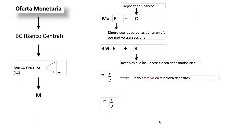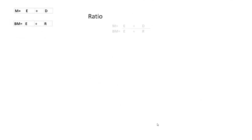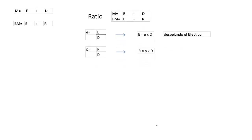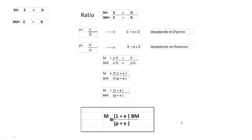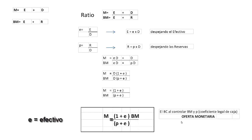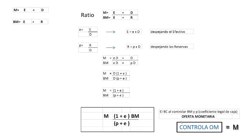El coeficiente legal de caja representa el porcentaje de depósitos que los bancos están obligados a tener inmovilizados en el Banco Central. A partir de la oferta monetaria y la base monetaria, podemos calcular el ratio oferta-dinero respecto a la base monetaria. Si despejamos el efectivo y las reservas de dicho ratio y luego sustituimos, obtenemos una expresión que, despejando M, nos da la oferta monetaria, mostrando que el Banco Central, al controlar la base monetaria y el coeficiente legal de caja, está controlando la oferta monetaria.